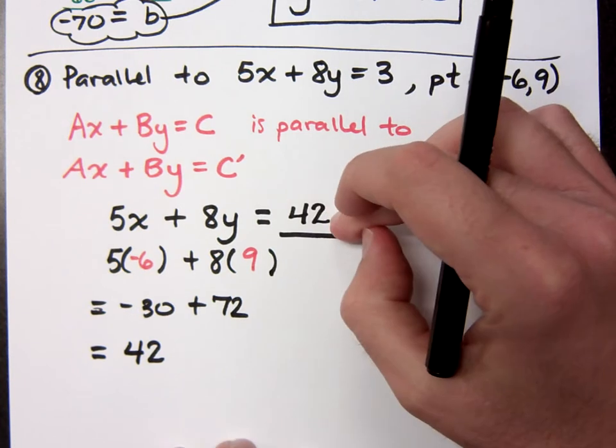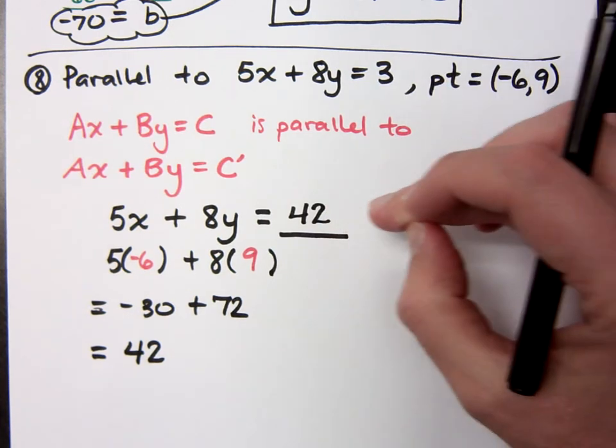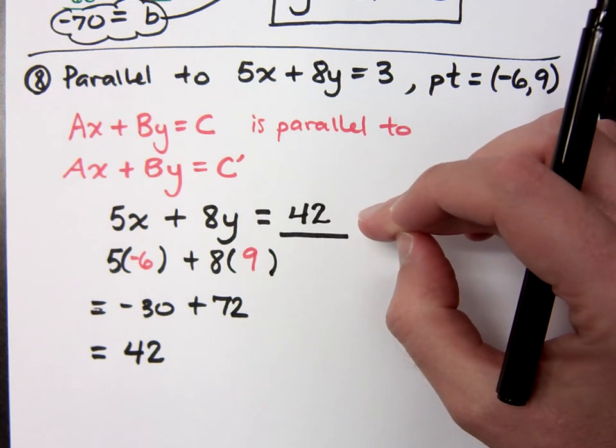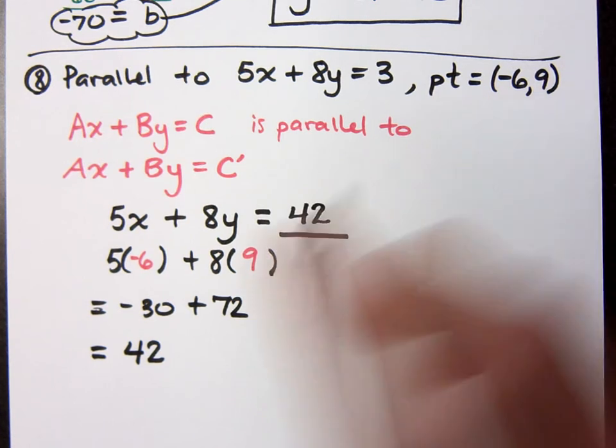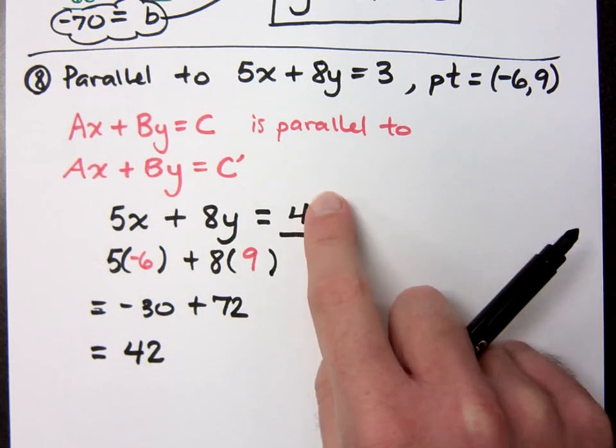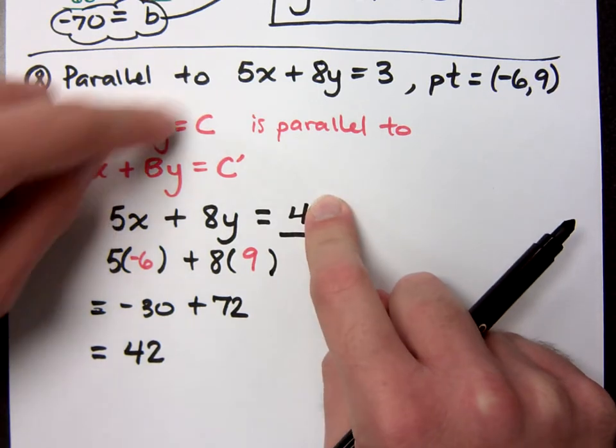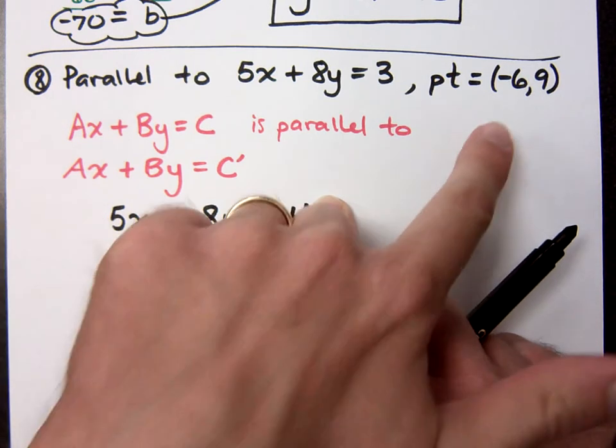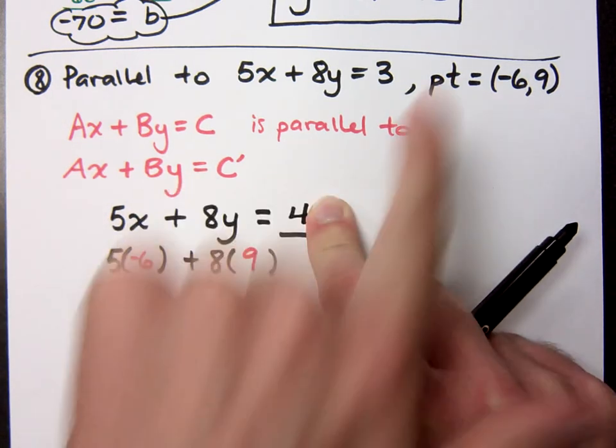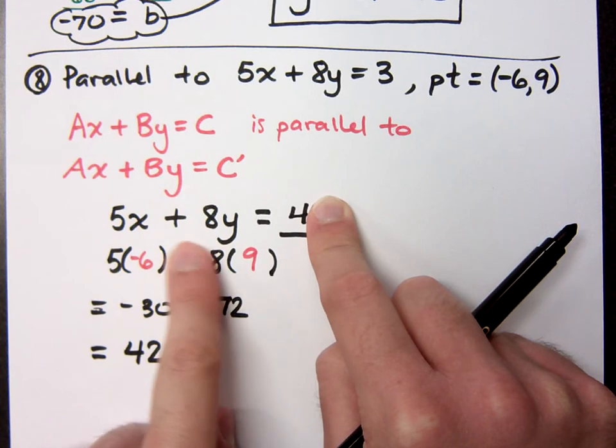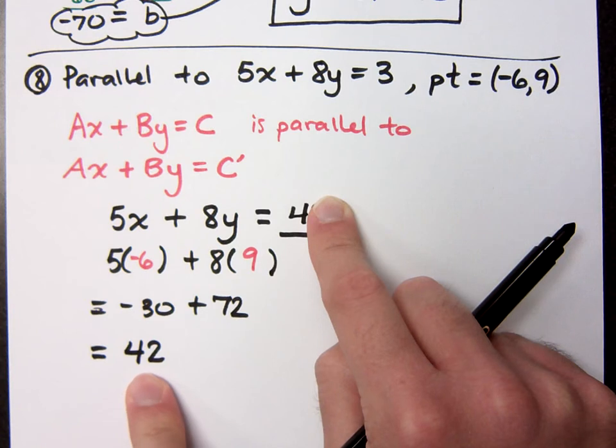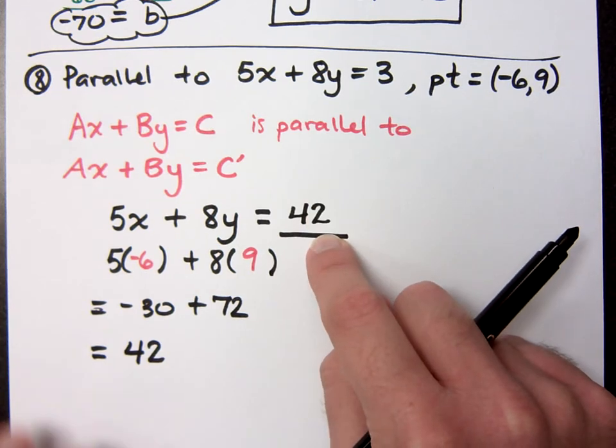Now why is it 42 and not, say, 4? Because if it was 4, I wouldn't pass through the point (-6, 9). If it was 4, if it was this guy right here, would these guys be parallel? They would. They'd be parallel, but would (-6, 9) be a solution for this equation? No, because if I plug in negative 6 and positive 9, I got 42. So that's why I have 42 right here.